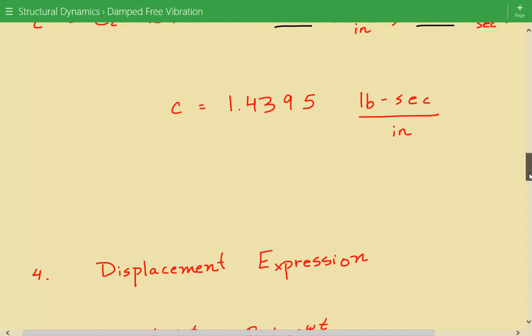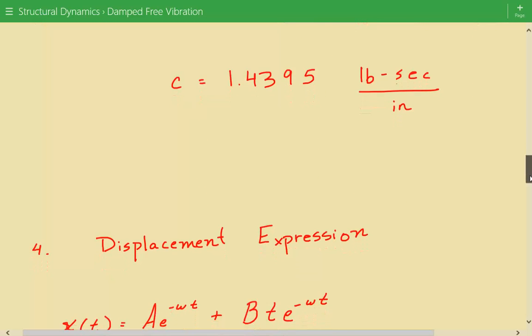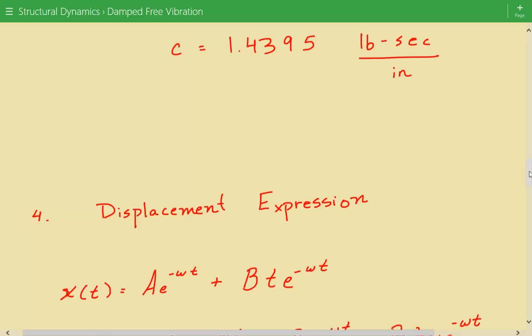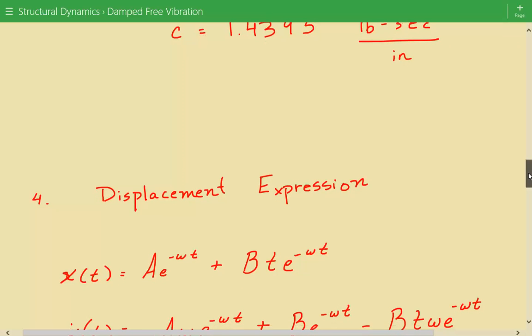Now to calculate the displacement of the mass, we have to take a look at the displacement expression. So for a critically damped system, this is the expression for the displacement. The displacement of the mass can be represented by this equation. It's equal to A times e to the power of negative omega times t plus B times t times e to the power of negative omega t.